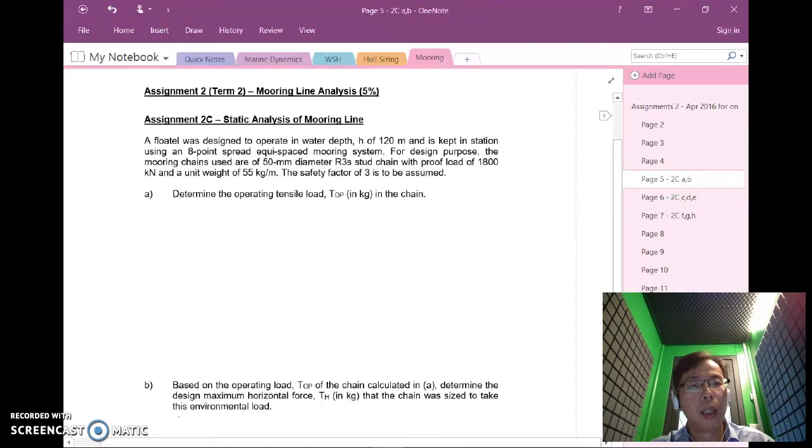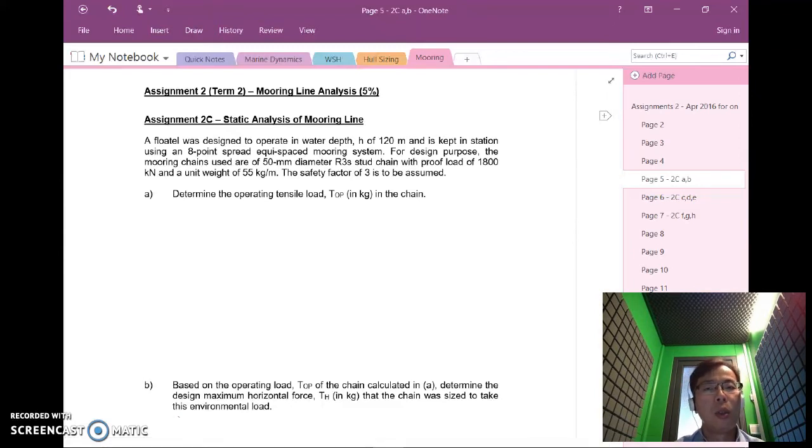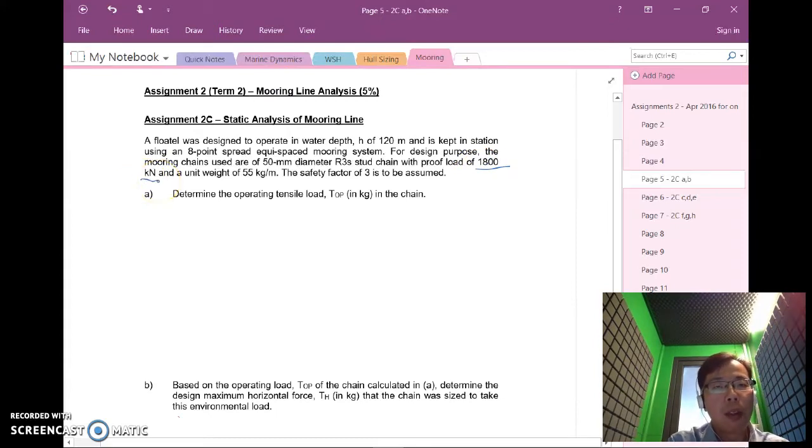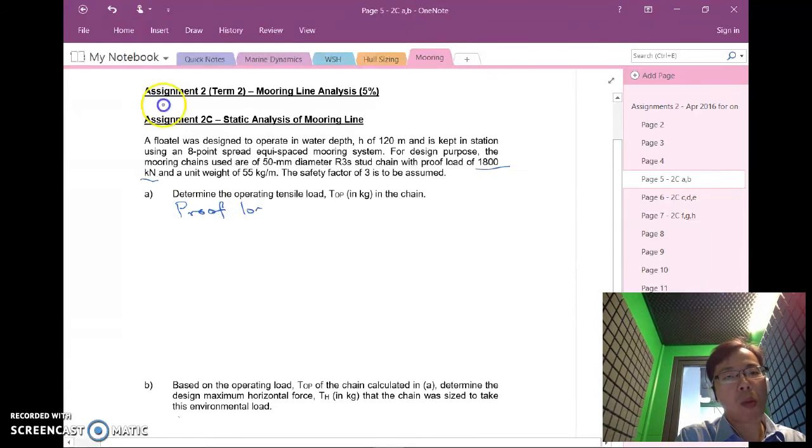Let's go back to the question. Determine the operating tensile load for the chain. What would be the safe working load for this chain indicated? In this question is indicated as 1800 kN from the R3S and 50mm diameter which is a stud chain so this is the proof load of the chain. Let me write down proof load of the chain is 1800 kN.